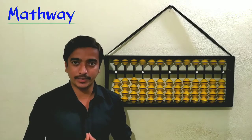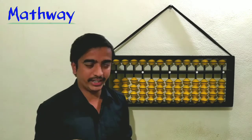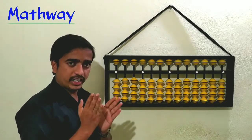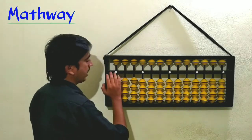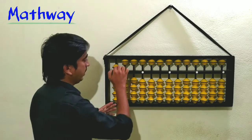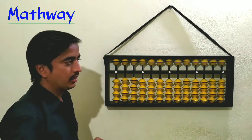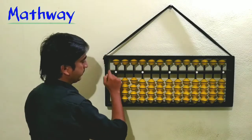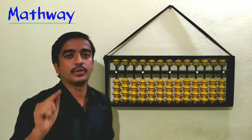Now let's see how to represent numbers on the abacus. The most important point is: whenever you begin any calculation or are about to show a number on the abacus, there should be no bead in touch with the answer line. Just arrange it so all beads are away from the answer line.